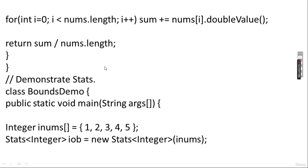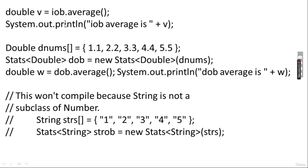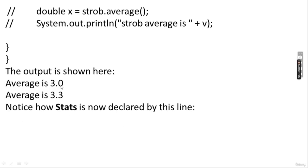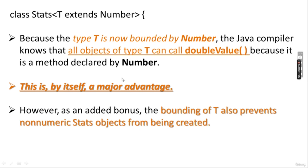In the BoundsDemo main class, an Integer array {1,2,3,4,5} is used with Stats<Integer>. T is replaced by Integer, which is allowed because Integer is a subclass of Number. Then double v = iob.average() gives the integer average. Similarly, a Double array {1.1, 2.2, 3.3, 4.4, 5.5} with Stats<Double> computes dob.average(). An attempt with Stats<String> won't compile because String is not a subclass of Number.